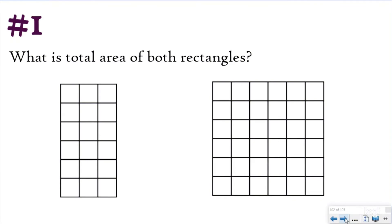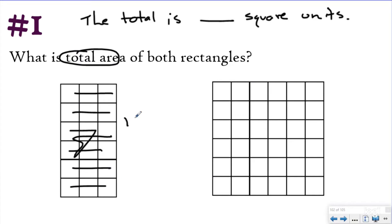Our first question says, what is the total area of both rectangles? So my statement is going to say the total area is blank square units. To find this, you could either do the area formula for both of these, or you could just count them. For this one, I'm just going to skip count because I know area is square units that cover the surface of a shape. So three, six, nine, 12, 15, 18 square units here.